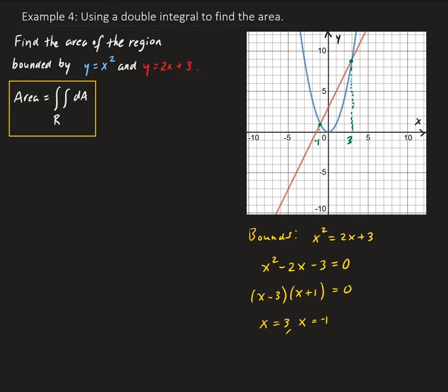For this integral, let's use a vertical representative piece. I'll draw one in there. Since we're using a vertical piece, this is going to be in terms of dx, so we want dx on the outside of our integral. That means we're going to have dy inside.